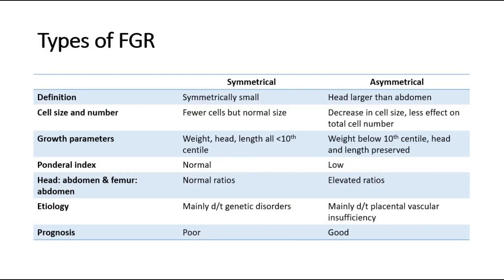Fetal growth restriction can be divided into symmetrical and asymmetrical types. In the symmetrical type, the baby is symmetrically small with fewer cells but of normal size, and the whole body — including weight, head, and femur length — are all below the 10th centile. In the asymmetrical type, the head of the fetus is larger than the abdomen; there is a decrease in cell size but less effect on total cell number, and only the abdominal circumference is reduced while head circumference and femur length are preserved.